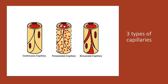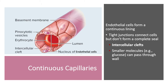There are three types of capillaries, and we differentiate between them based upon their degree of permeability: the continuous capillaries, the fenestrated capillaries, and the sinusoidal capillaries. Just looking at these, which do you think is most permeable?